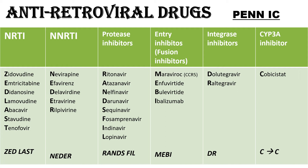Please note all these drugs end with '-vir'. Among the Entry Inhibitors we have Maraviroc, which acts as a CCR5 receptor antagonist, and Enfuvirtide, Bulevirtide, and Ibalizumab — these three drugs act on the GP120.